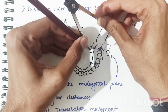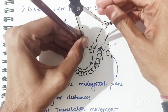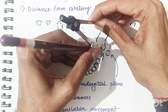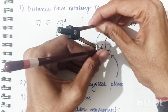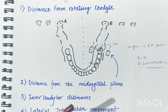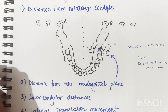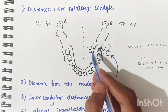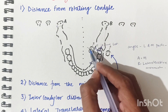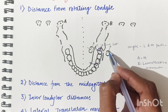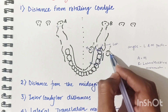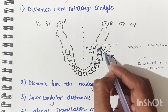Comparing the three molars at different distances from the mid-sagittal plane, the angle between the mediotrusive and lateral trusive paths increases as we move farther from the mid-sagittal plane. So distance from the mid-sagittal plane is directly proportional to the angle between these paths.